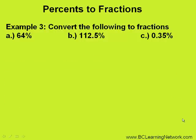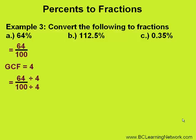Let's convert these three percents to fractions. We'll start with 64%. Percent means out of 100, so 64% becomes 64 over 100. Now all there is left to do is reduce this fraction. We will find the greatest common factor, which is 4, and then divide the numerator and denominator by 4, which gives us an answer of 16 over 25.